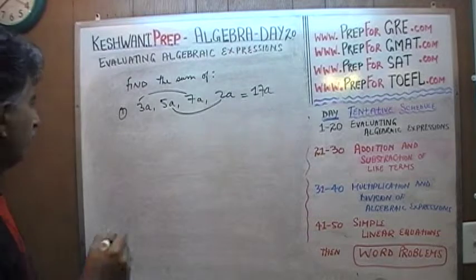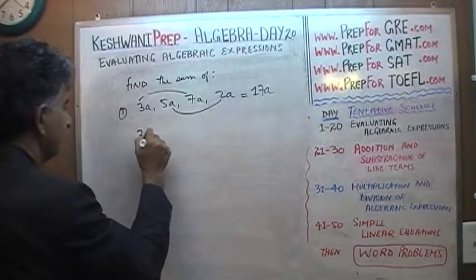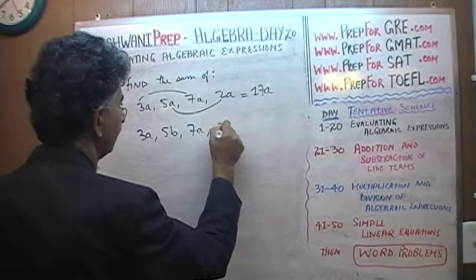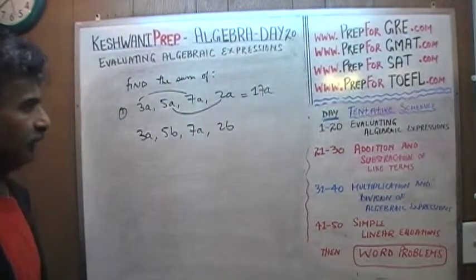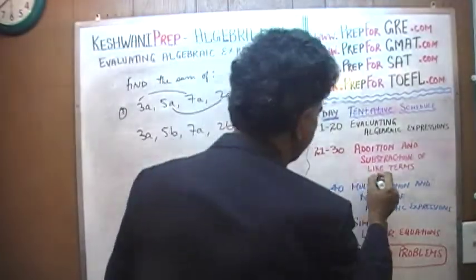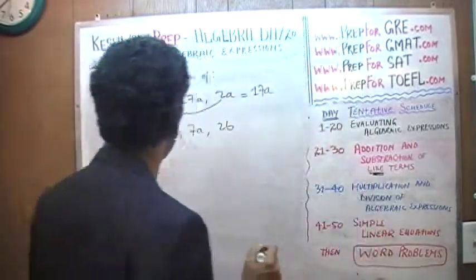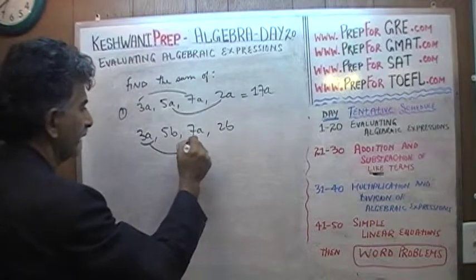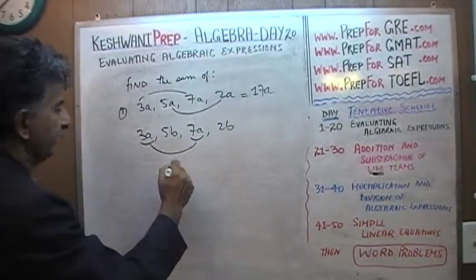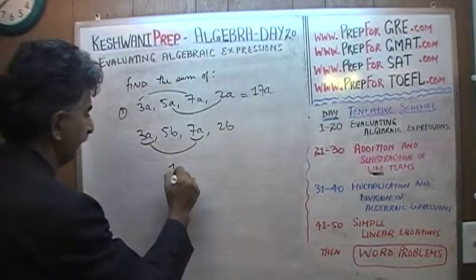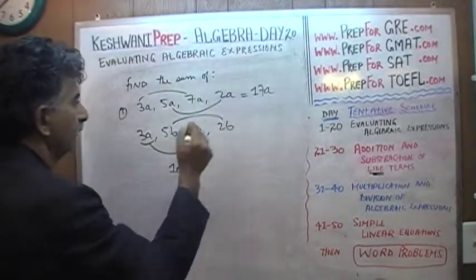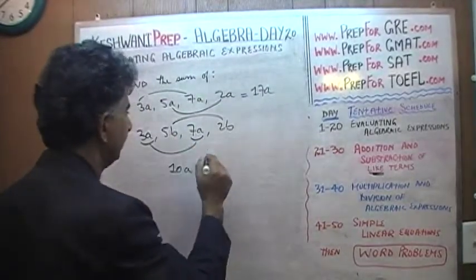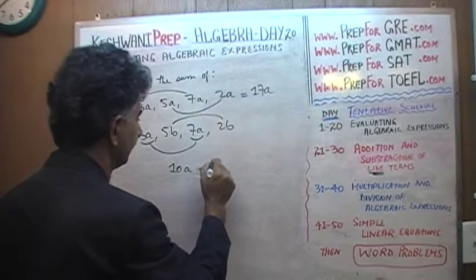Now, what would we have done if we had something like this? 3a plus 5b plus 7a plus 2b. In which case we have to combine the like terms. We have to combine the a's together: 3a plus 7a is 10a, and then combine the b's together: 5b plus 2b, which is 7b.